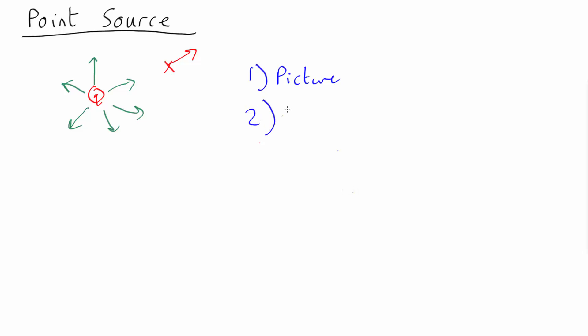Pick your Gaussian surface. Well, we want a surface that's either parallel or perpendicular all the way to the electric field. The obvious one is a sphere all the way around the charge, say, of radius R.